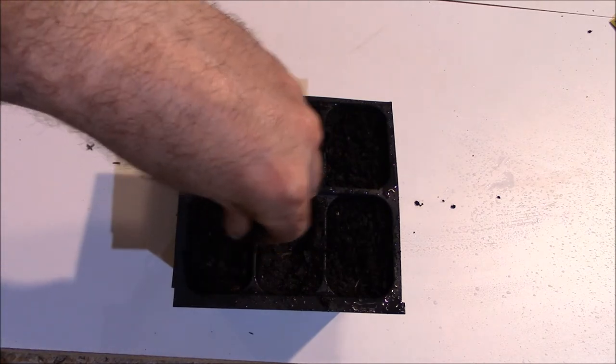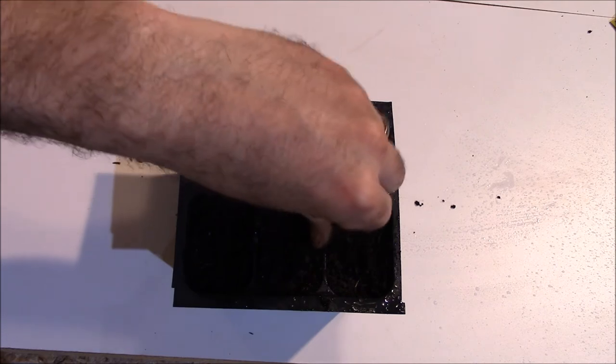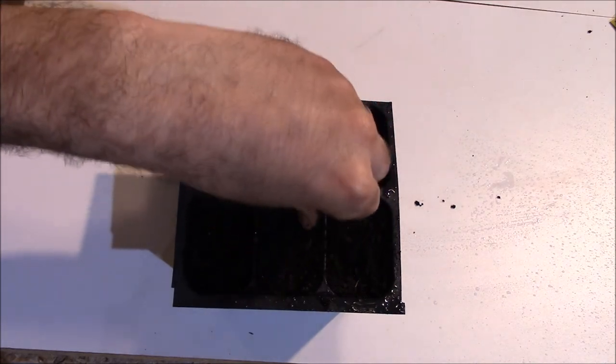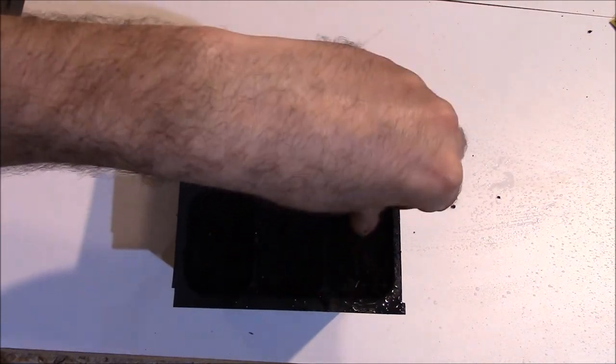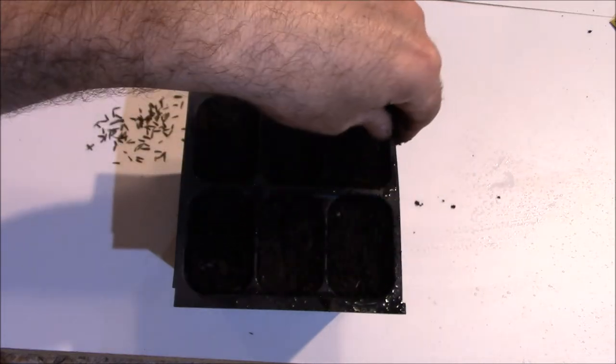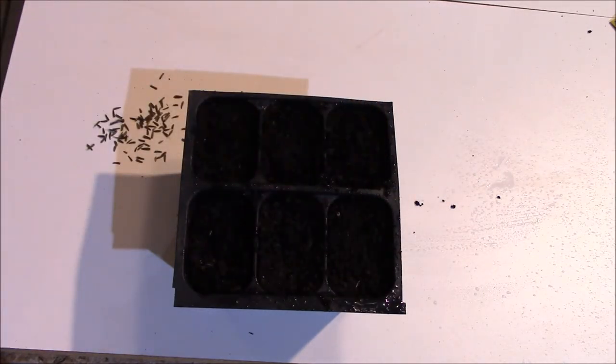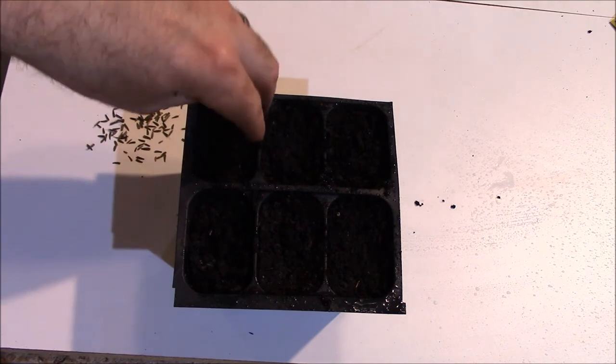So if the seed is really thin like a millimeter, you're going to plant it 2 or 3 millimeters deep. If it's paper thin, just put it on the surface. If it's just a little speck, put it right on the surface.